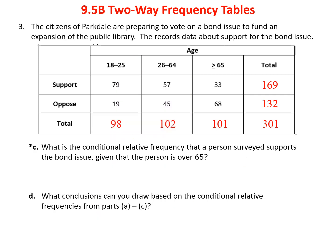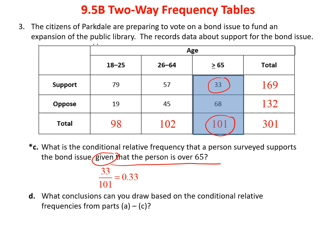Given that a person is over 65, they're in this category. How many supported it? 33. How many total in that category? 101. So the number of people who supported it who were over 65 was 33%. Only a third of the senior citizens supported the bond.